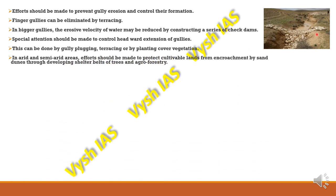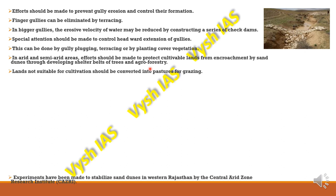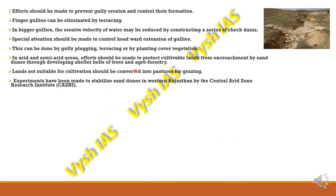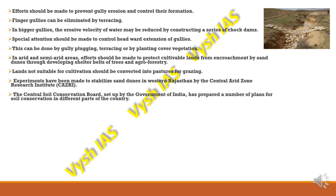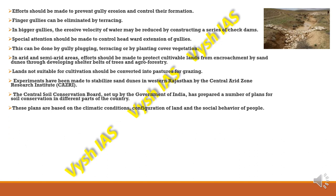In arid and semi-arid areas, efforts should be made to protect cultivable lands from the encroachment of sand dunes. This can be done by developing shelter belts of trees and agroforestry around those regions. Lands not suitable for cultivation can be converted into pastures for grazing, thereby controlling overgrazing. Experiments have been done to stabilize sand dunes in Western Rajasthan by the Central Arid Zone Research Institute. The Central Soil Conservation Board, set up by the Government of India, has prepared plans for soil conservation, based on climatic conditions, land configuration, and social behavior of people.